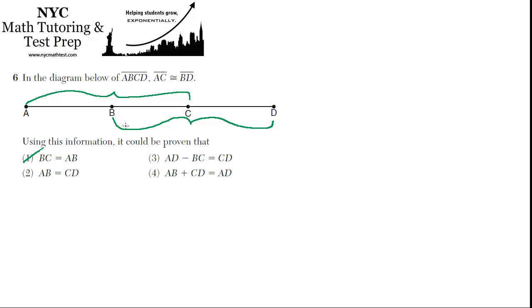AB is equal to CD. That's going to work, right? AB, just this part, is congruent to CD. How would you prove that?